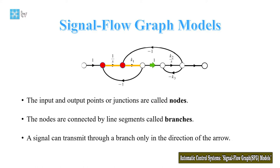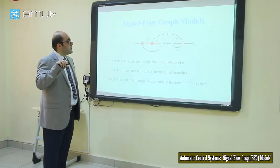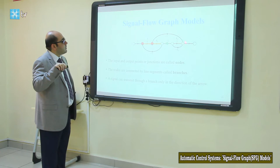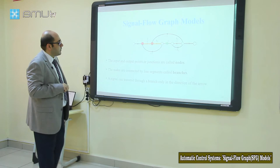For this branch, the signal cannot transmit from this point to that point because the direction of this branch goes from this point to this point — from the right-hand side of our figure to the left-hand side of the figure.